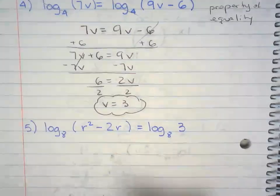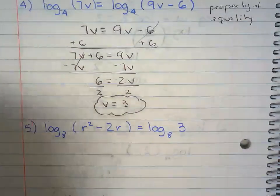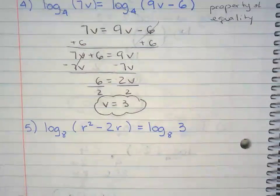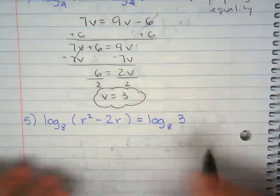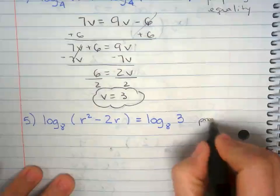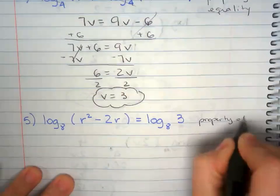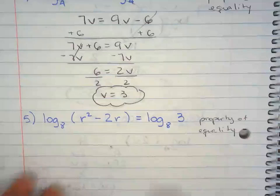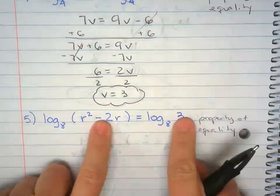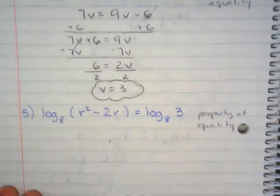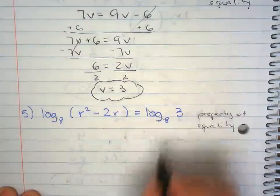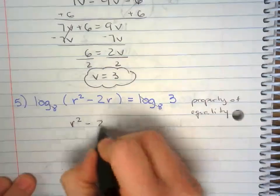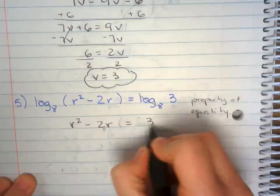Last one. This question I got when I was at 85-ish, so if you're going for an A, that's what you need to do. Again, property of equality. That means these two are equal, so they simplify to r squared minus 2r equals 3.